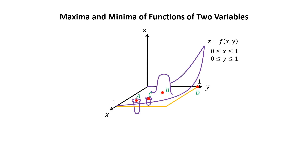Maxima and minima of functions of two variables. Here we have a graph of a function z equals f of xy of two variables, defined on a closed square where x is between 0 and 1 and y is between 0 and 1.